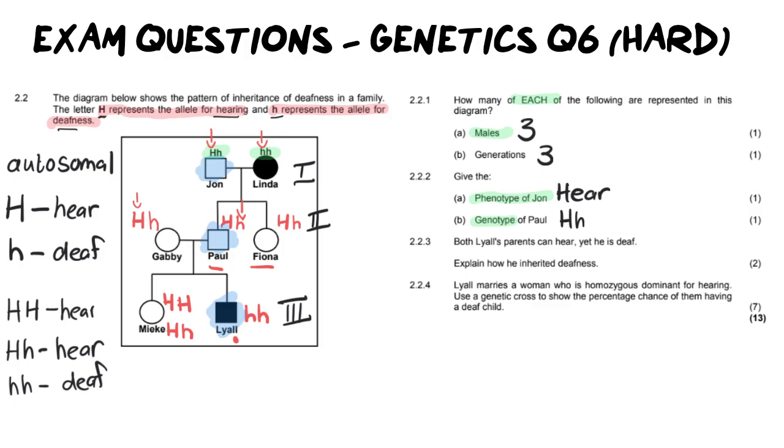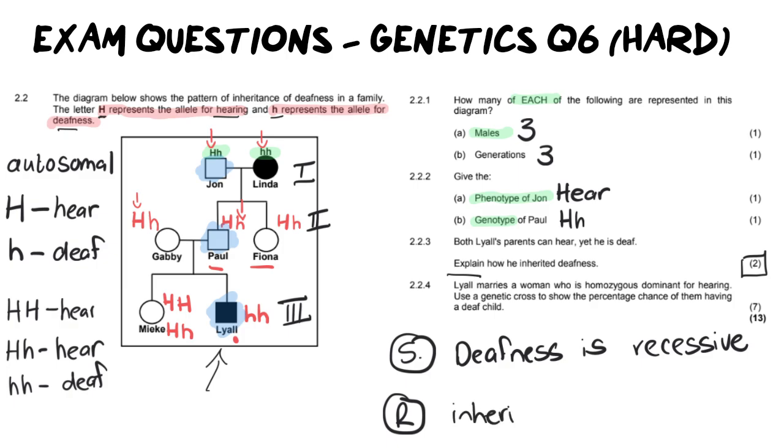Then it says both Lyle's parents can hear, which is true, Paul and Fiona, yet he is deaf. Explain how he inherited his deafness. Now the fact that you've already done the calculations for Lyle over here means that this is going to make your life a lot easier. Now you will see it is only two marks and it is an explain question. So remember for every explain question you provide a statement and then you provide a reason. So our statement is going to be that deafness is recessive, the reason for this is he then needs to inherit one allele from each parent. And that's what's going to get you two out of two.